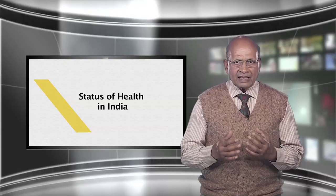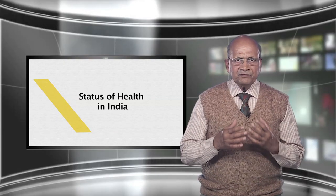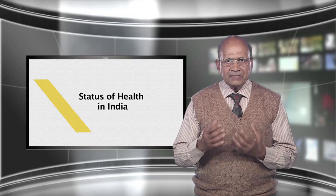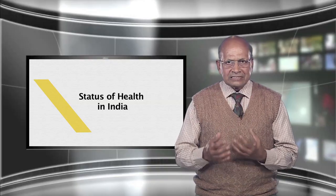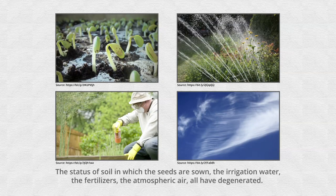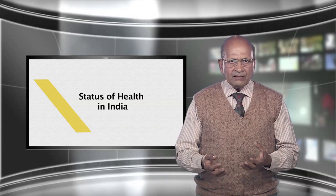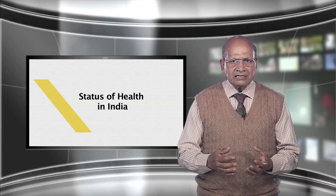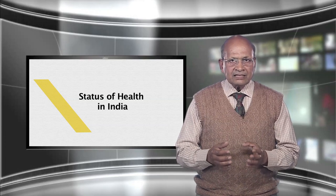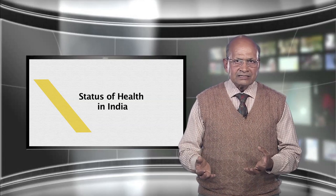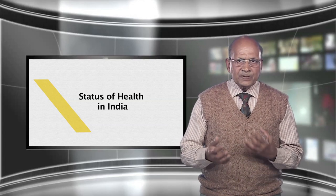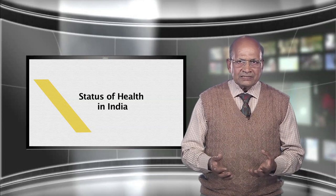Starting from prenatal health across the country, very few women are healthy during the pregnancy period, physically and mentally. It affects the offspring adversely. The status of soil in which the seeds are sown, the irrigation water, the fertilizers, the atmospheric air — all have degenerated. The foodstuff available in the market is largely contaminated. The green-washed vegetables and fruits are readily available in any season in the markets. There is a spurt in pesticide-laced vegetables across India.